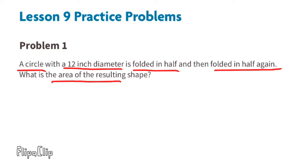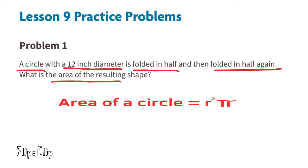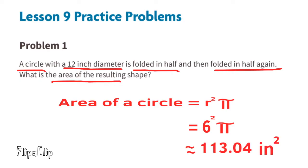The area of a circle equals the radius squared times pi. Since the diameter of this circle is 12, the radius would be 6. So the area of this circle would be 6 squared times pi, which is approximately 113.04 inches squared.